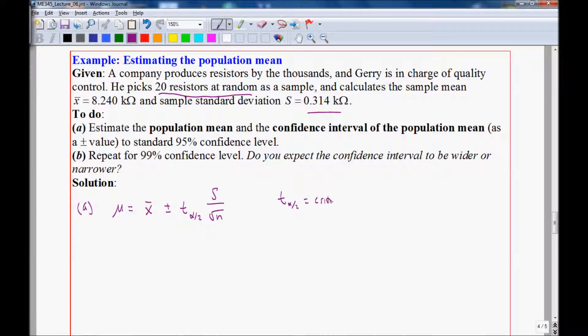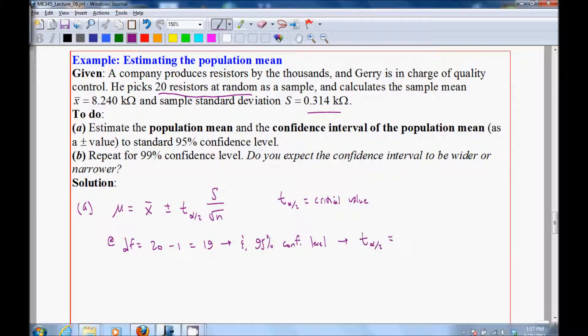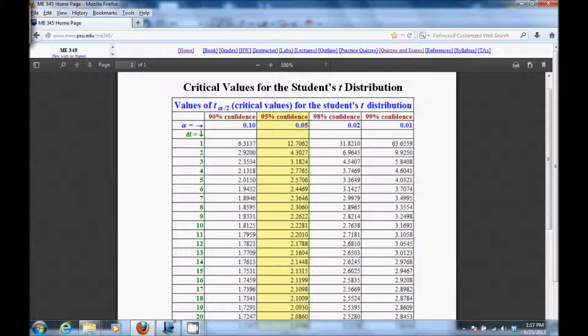T alpha over 2 is the critical value. We find that on tables. So we use the student's T PDF at DF. Degrees of freedom is 20. Number of data points minus 1 equal 19. And we were asked for 95% confidence level. We look this up in the table to find T alpha over 2.